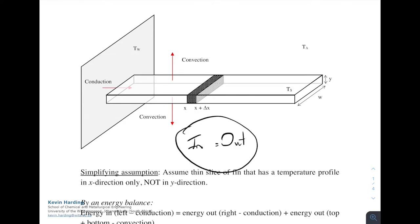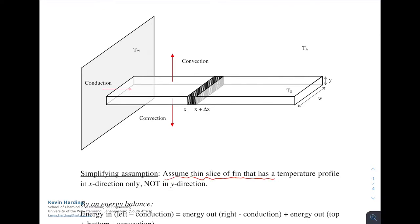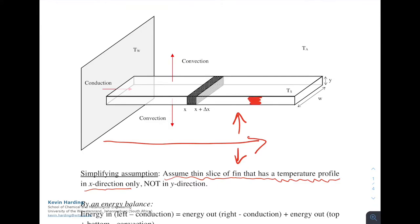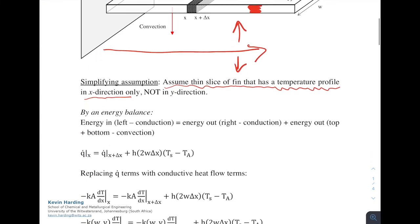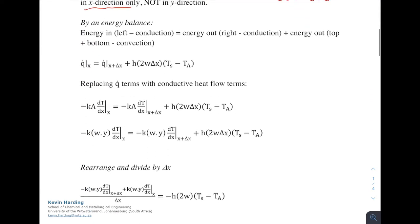Before proceeding, we make a simplifying assumption: we assume a thin slice of fin, so the temperature profile is only in the x direction. Heat moves from left to right and also up and down, but because the fin is so thin in the y direction, we are not going to worry about any temperature difference there. In reality there is a temperature difference, but because the length is so much longer in x, we only worry about the x direction.